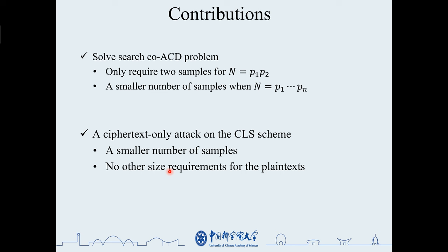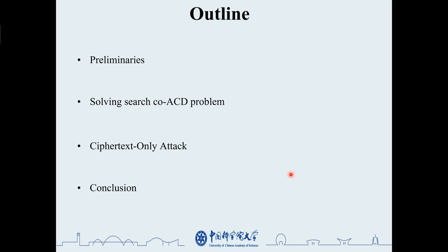The outline of this report is divided into four parts. The first part introduces the relevant preliminary knowledge. The second part introduces the specific methods to solve the co-ACD problem. The third part introduces the ciphertext-only attack, and finally makes a summary.